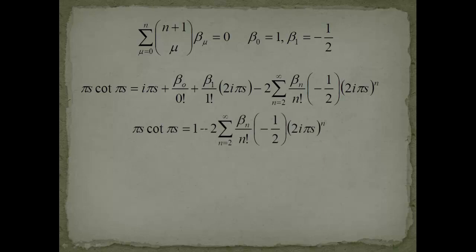Like I told you, this guy and this guy will cancel. We will get a 1 in front, then we have minus 2, then this infinite sum beta n over n factorial, then minus 1/2, and then we close the bracket. Here we have 2i pi s to the nth power.